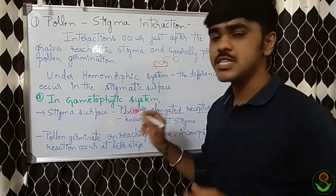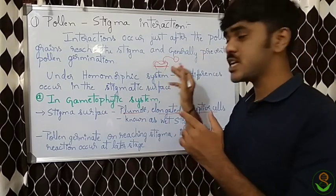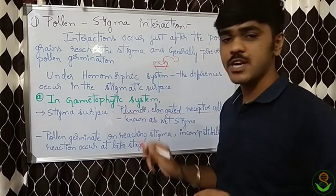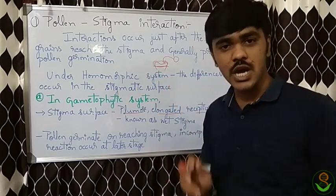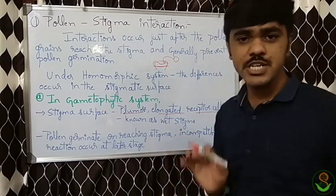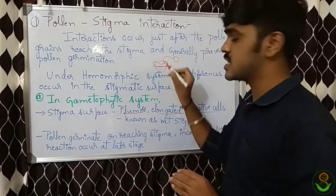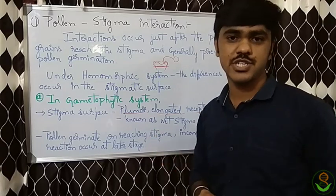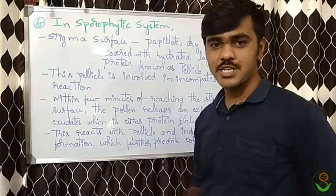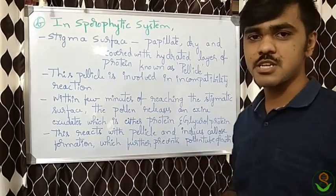In the gametophytic system, germination does occur and the incompatibility interactions take place at later stages — not at the stigmatic surface stage. After germination, the incompatibility reaction takes place. So the gametophytic system is an exception to the general rule of pollen-stigma interaction.